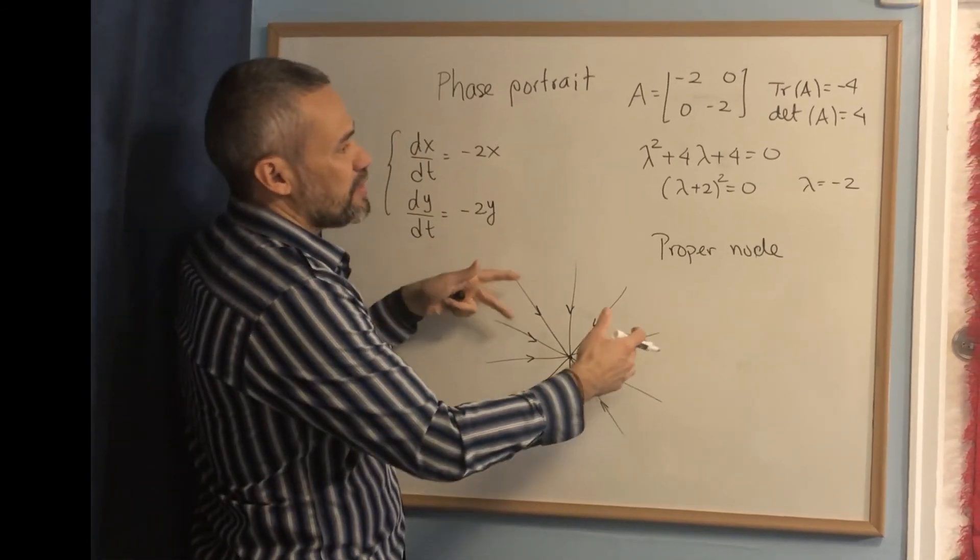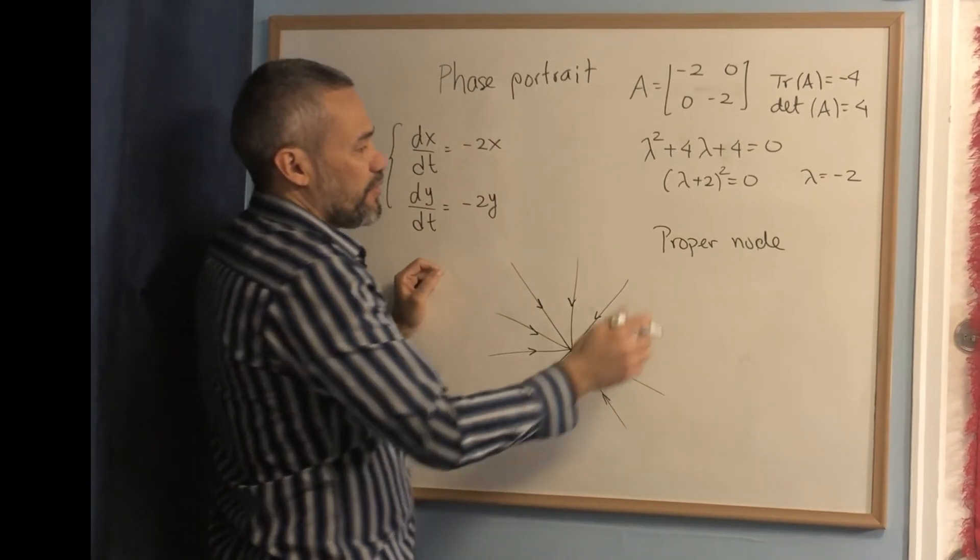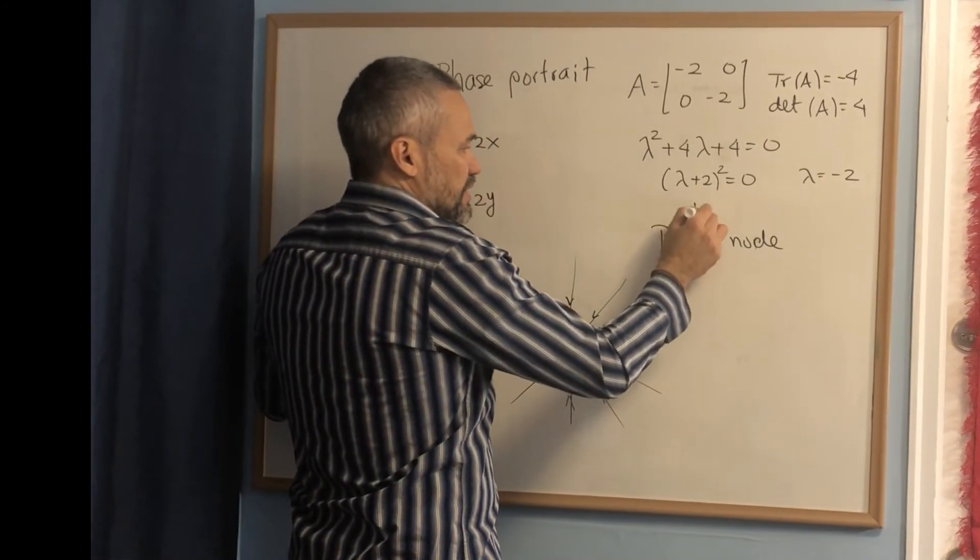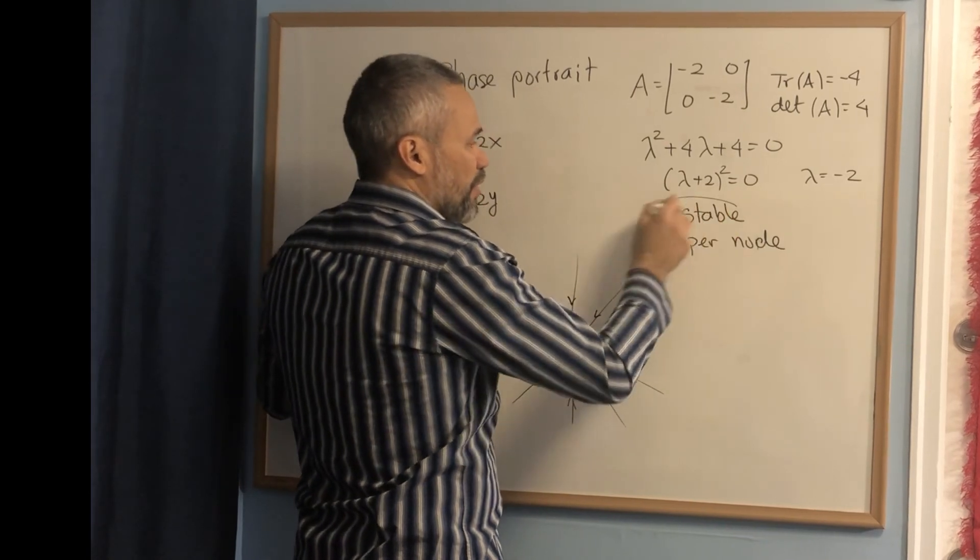And since this lambda is negative, everything goes toward the origin. Sometimes we call this a stable proper node.